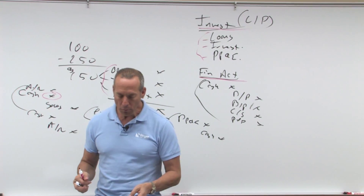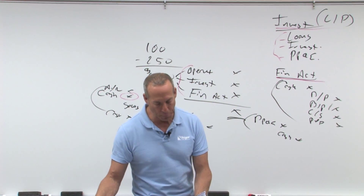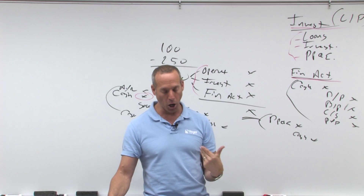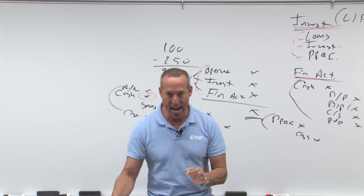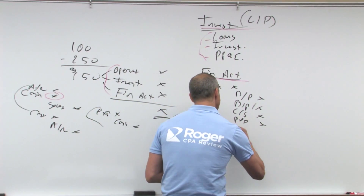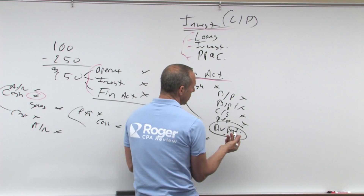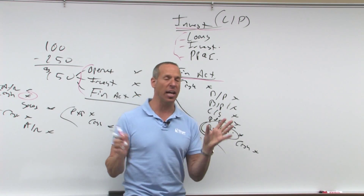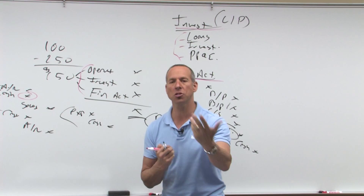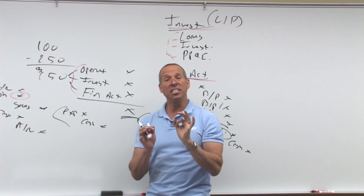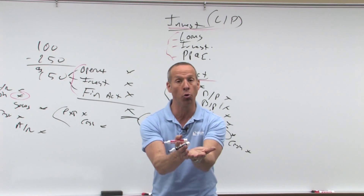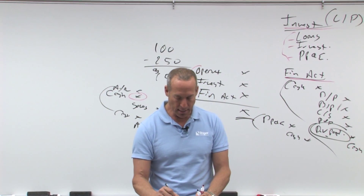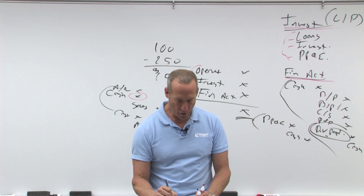If you look in your notes, it says proceeds from issuing or payments for retiring bonds — because interest expense is operating. Issuance or reacquisition of treasury stock would be financing. Borrowing or repaying a loan. Circle the next one: dividends paid. Dividends paid is important — generally you credit cash and cash goes out. Notice that is a financing activity. I'm confused — interest received, interest paid: operating. Dividends received: operating. But dividends paid is considered a distribution to the owners, therefore it's considered a financing activity.